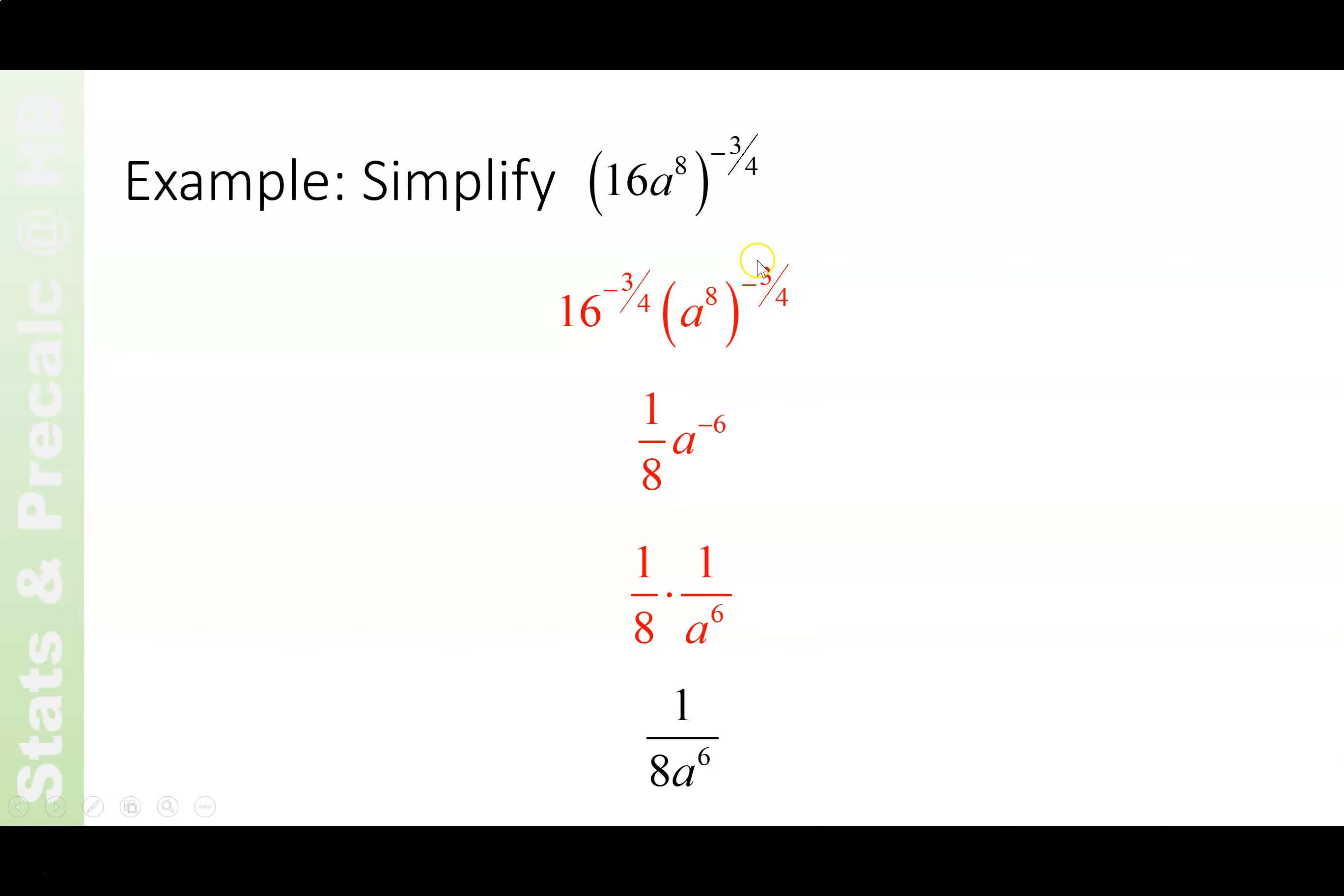A to the 8th to the negative 3 4ths. That's 8 times negative 3 4ths is negative 24 4ths, or negative 6. Or you could also say, what's 3 quarters of 8? That's 6. So 8 to the negative 6th, which is 1 over 8 to the 6th. So your total answer, 1 over 8, 8 to the 6th.